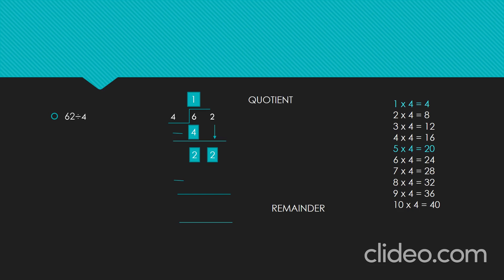That is, by multiplying 5 with 4. So, let's write 5 in the ones place of the quotient and 20 below 22. Let's subtract 20 from 22 — that is, 22 minus 20 gives 2. Here, our quotient is 15 and remainder is 2.